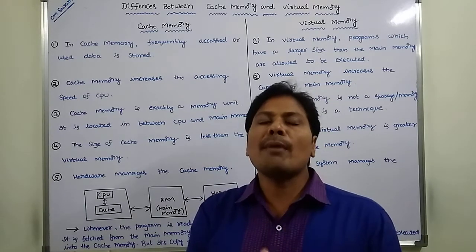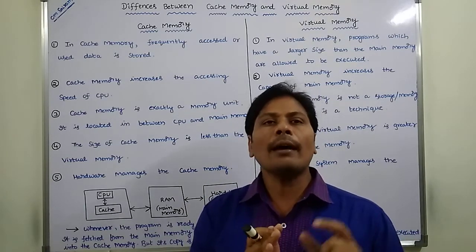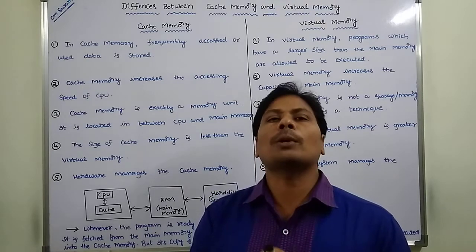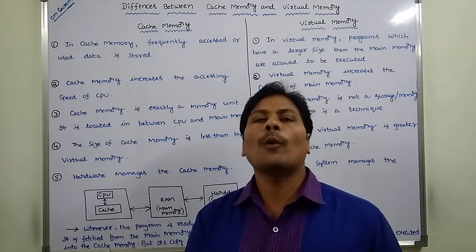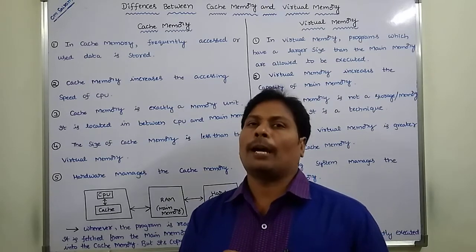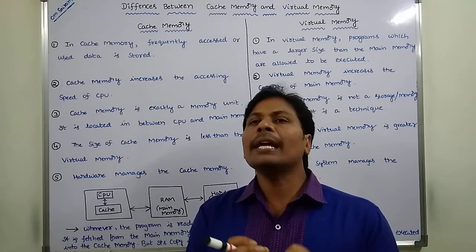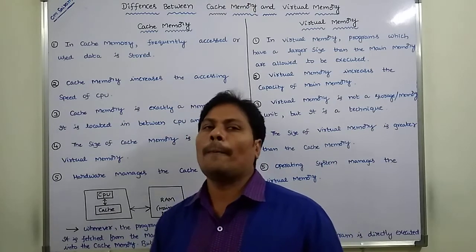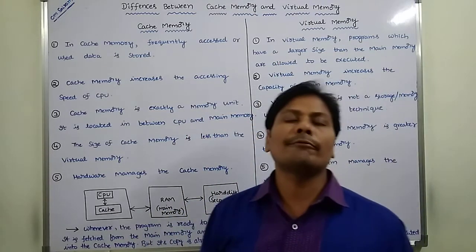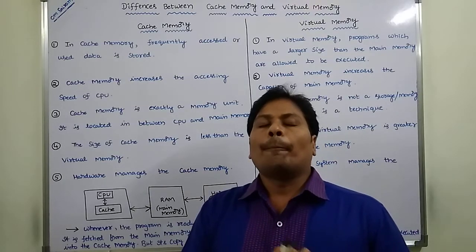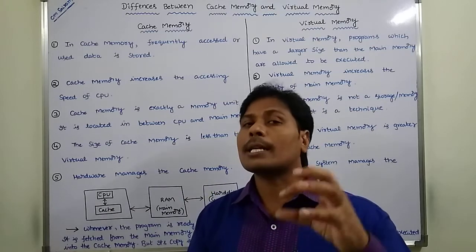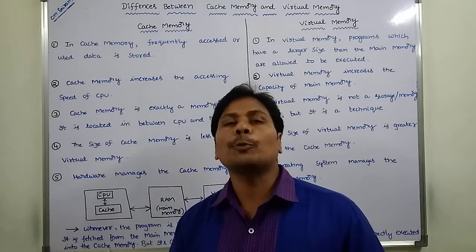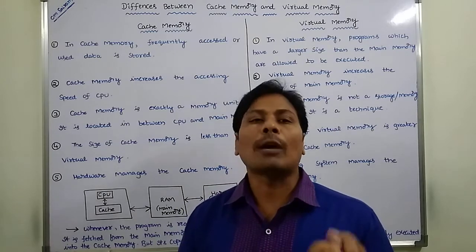The first point: cache memory is located in between the CPU and main memory. Cache memory mainly stores the recently accessed data or frequently accessed data. Whereas in the case of virtual memory, programs that have a larger size greater than the main memory capacity — those programs are to be executed by using virtual memory.